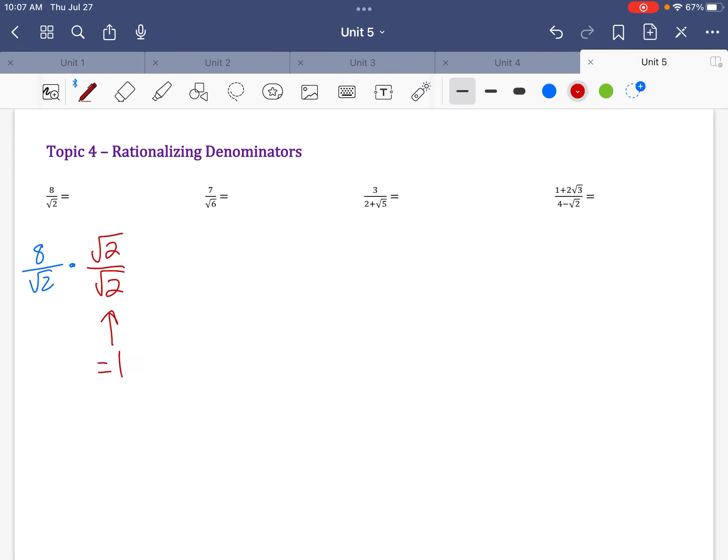So really all you're doing is multiplying by 1, right? Because radical 2 over radical 2 is equal to 1. So you're just changing how the problem looks. You're not changing the value of it.